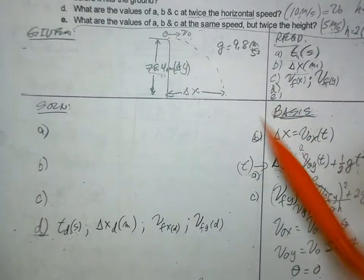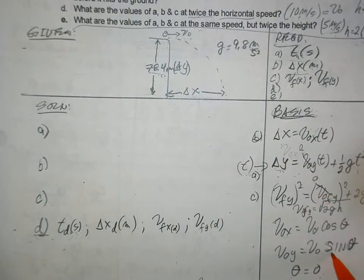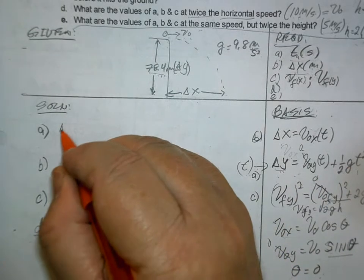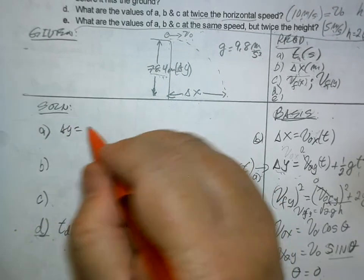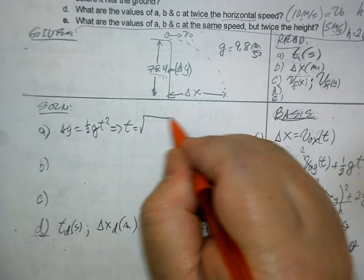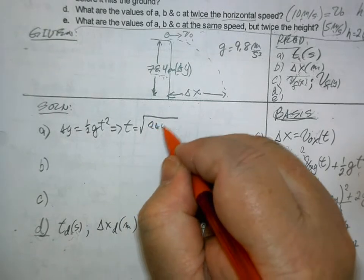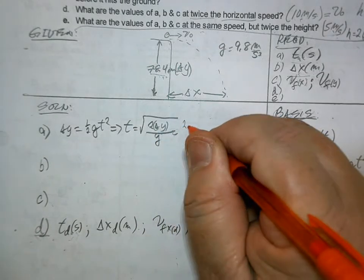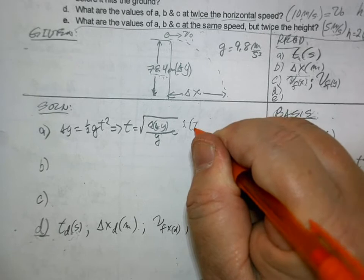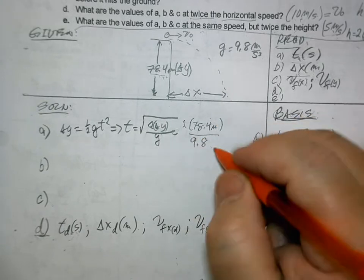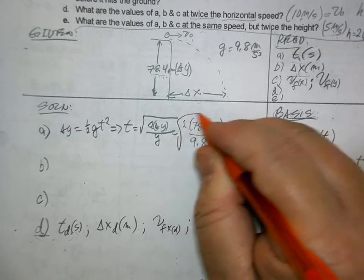Here at the start, v of y is 0 because the angle is 0, sine of theta is 0, so this is 0. That becomes 0 and you'll have this. Write it down. It's delta y equals one half g t squared. And you transform that, solving for t is the square root of 2 delta y divided by g, which is 2 times 78.4 meters divided by 9.8 meters per second squared. And then you take the square root.